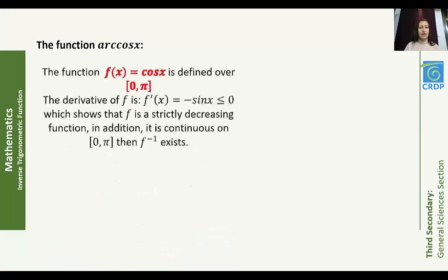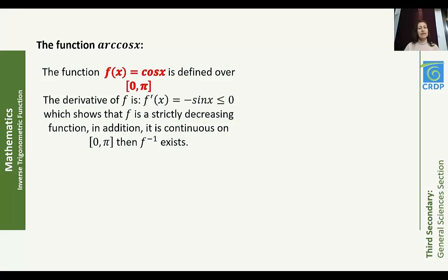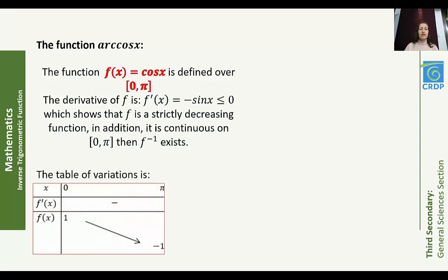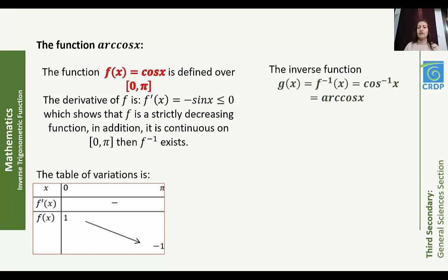Next, we study arc cosine x. The function f(x) = cos(x) is defined from −∞ to +∞, but we limit our study to [0, π]. On this interval, f'(x) = −sin(x) ≤ 0, showing f is strictly decreasing — even though f' vanishes at only one point. f is continuous on [0, π], so f⁻¹ exists. The table of variations of f: x ∈ [0, π], f' is negative, and f(x) is strictly decreasing from 1 to −1. The inverse function g(x) = f⁻¹(x) = cos⁻¹(x) is denoted arc cosine x.